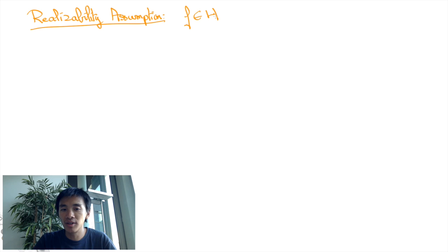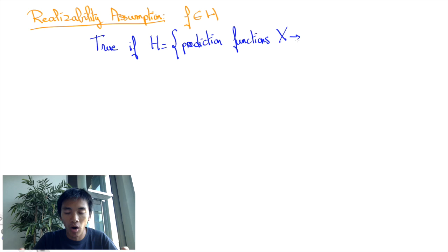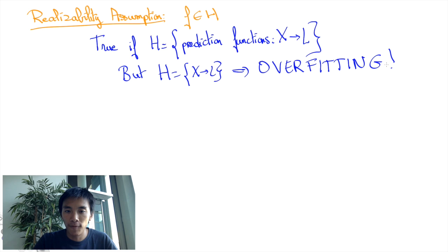Evidently, this condition is easily satisfied if we consider all prediction functions or hypotheses we should consider. However, in addition to the minor computational trouble that this raises, doing so would not be a good idea because of overfitting. In fact, in practice, it's often been shown that it's much better to compute prediction functions that do not even agree with all the data of the sample set.